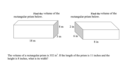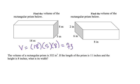Remember our volume is length times width times height. So if we get started with our first one, the volume is 18 times 5 times 8, which will give us an answer of 720 millimeters cubed.